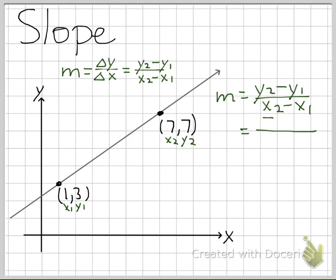We get 7 minus 3 for y2 minus y1, and we get 7 minus 1 for x2 minus x1. This gives us 4 over 6, which becomes 2 thirds. So our slope of that line is 2 thirds. If we go back to the definition of slope, that means for every two units up, we go three units to the right, or that's our change in x.